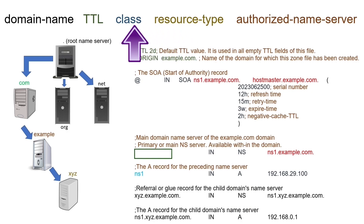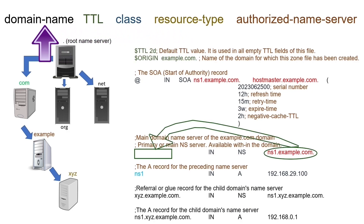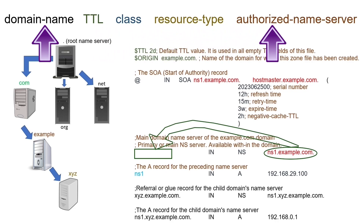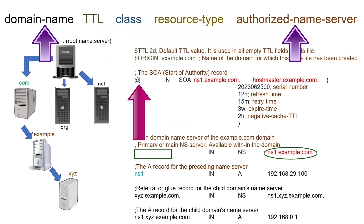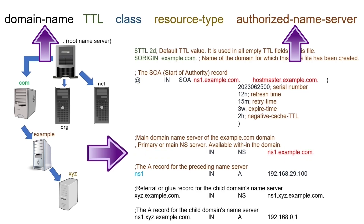The domain name field defines the domain for which it configures the authorized name server. If we leave this field empty, DNS uses the previous record's name field's value in this field. Usually, NS records are placed just after the start of authority record.